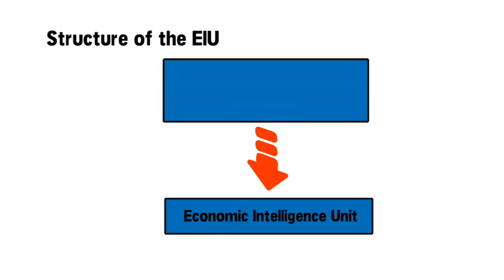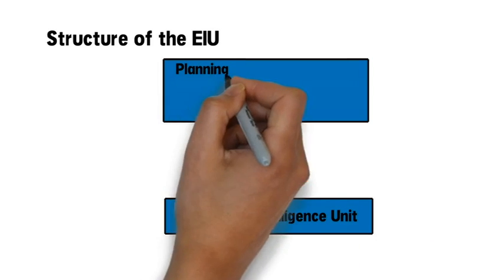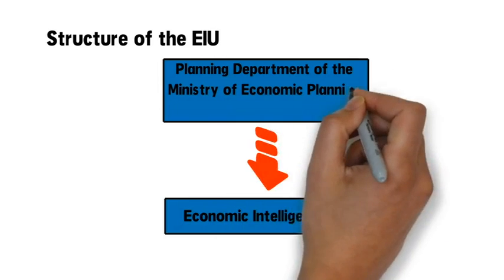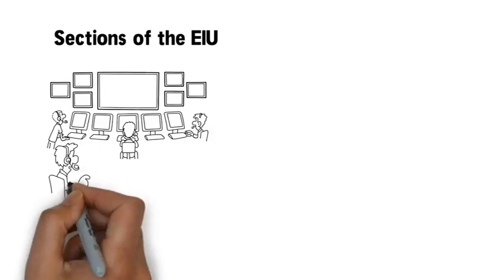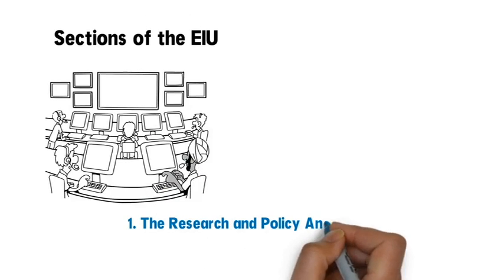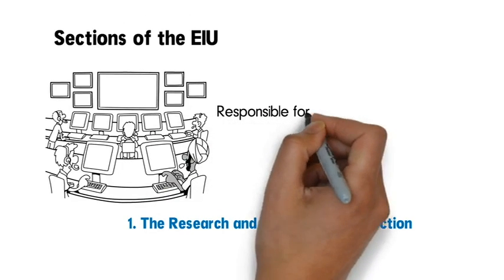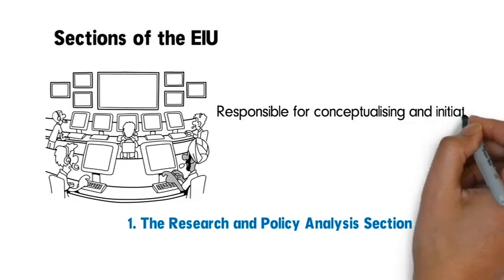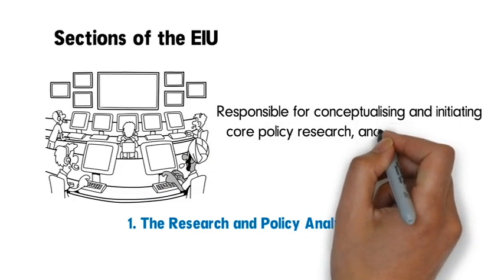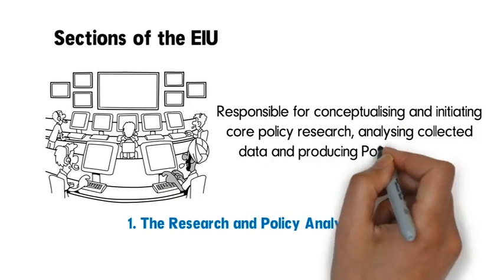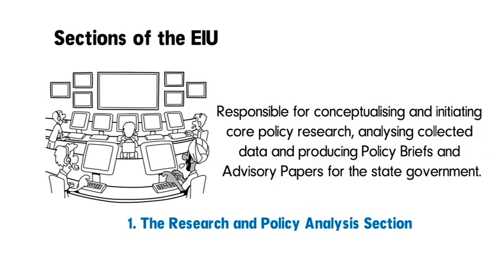The structure of the EIU. The unit should be established under the Planning Department of the Ministry of Economic Planning and Budget and should have the following sections. The Research and Policy Analysis section is responsible for conceptualizing and initiating core policy research, analyzing collected data, and producing policy briefs and advisory papers for the state government.